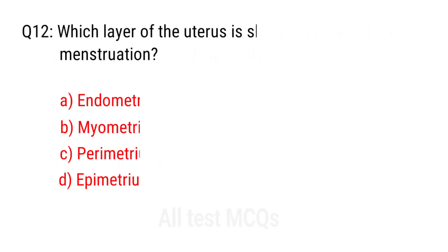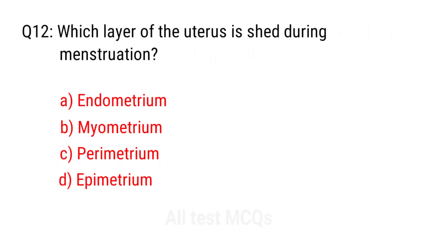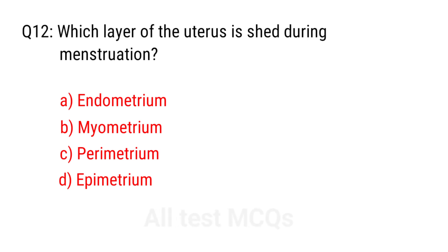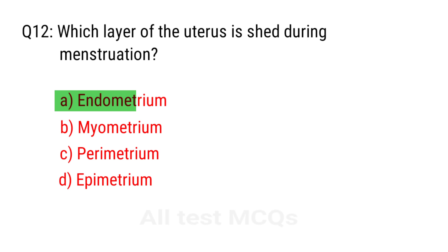Q12. Which layer of the uterus is shed during menstruation? The right answer is option A: Endometrium.